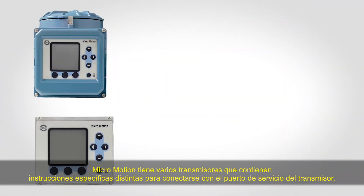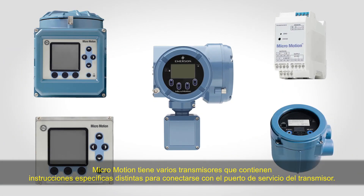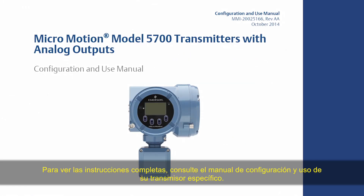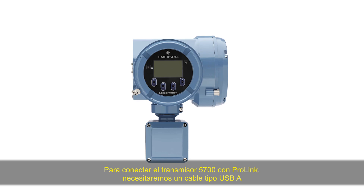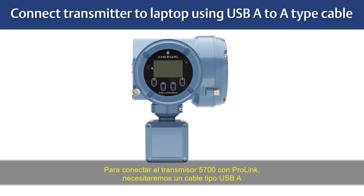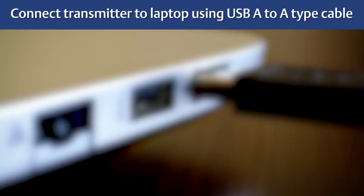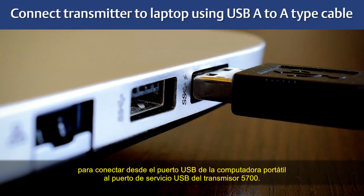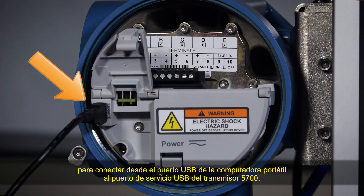MicroMotion has a variety of transmitters that each have specific instructions for connecting to the transmitter service board. Please refer to the configuration and use manual for your specific transmitter for the complete setup instructions. Connecting the 5700 transmitter with ProLink, we will need a USB-A type cable and connect from the laptop computer's USB port to the USB service board on the 5700 transmitter.